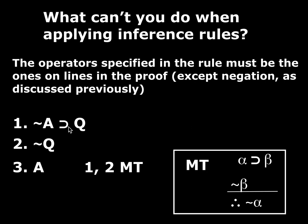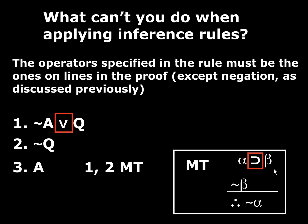Sometimes students will say, here's modus tollens again, and this is perfectly legit: conditional, negation of the consequent, derived negation of the antecedent. Sometimes students ask, can I use modus tollens on a disjunction? What they have in mind is using a disjunction instead of a conditional, having the negation of the second component, and deriving the negation of the first component — applying the rule on a disjunction instead of a conditional. The answer is no. You can't do that. There's a reason that the conditional shows up in the rule, and in the verbal expression of modus tollens it says, if you have a conditional. So don't do that.